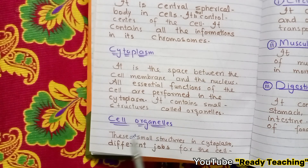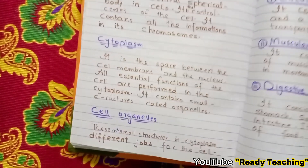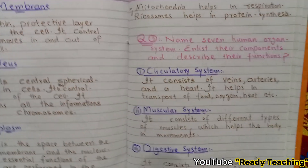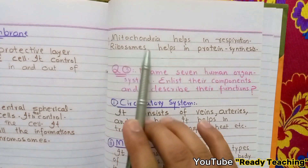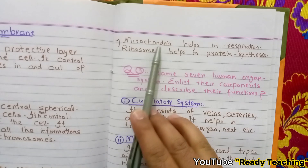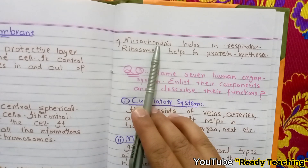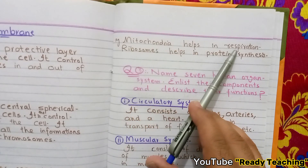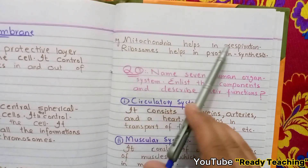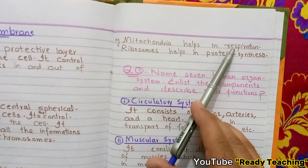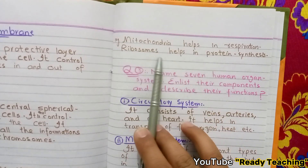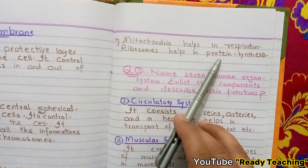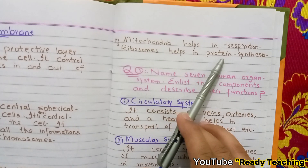The organelles in the cytoplasm each perform different jobs for the cell. Mitochondria help in respiration and energy release. Ribosomes help in protein synthesis. These are the key organelles of an animal cell.